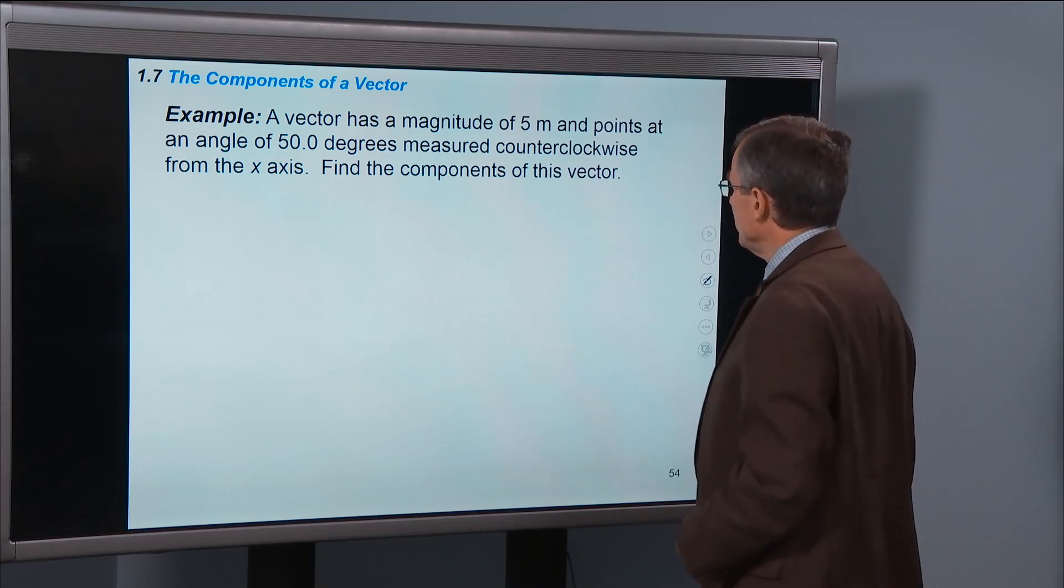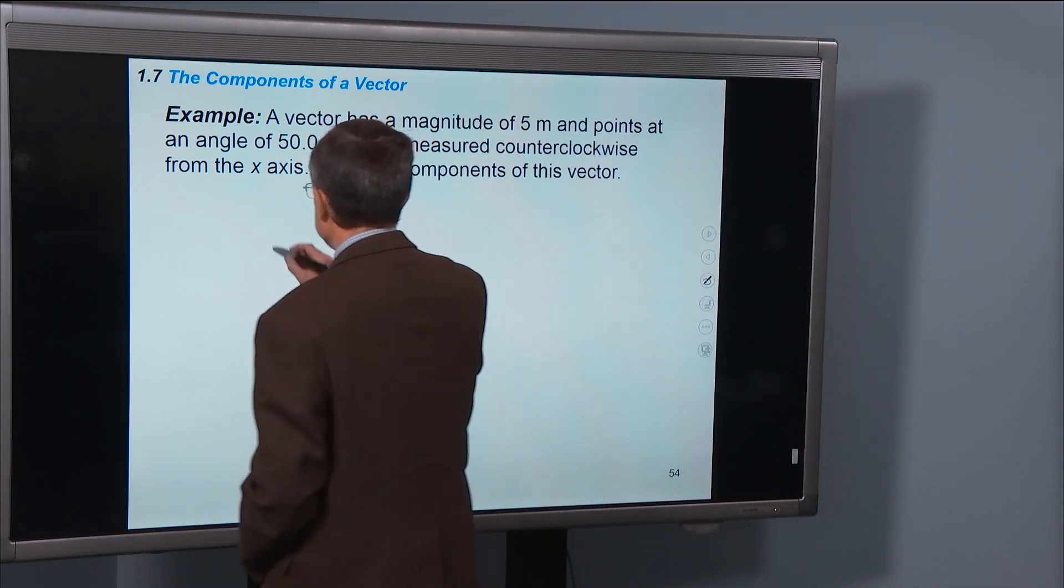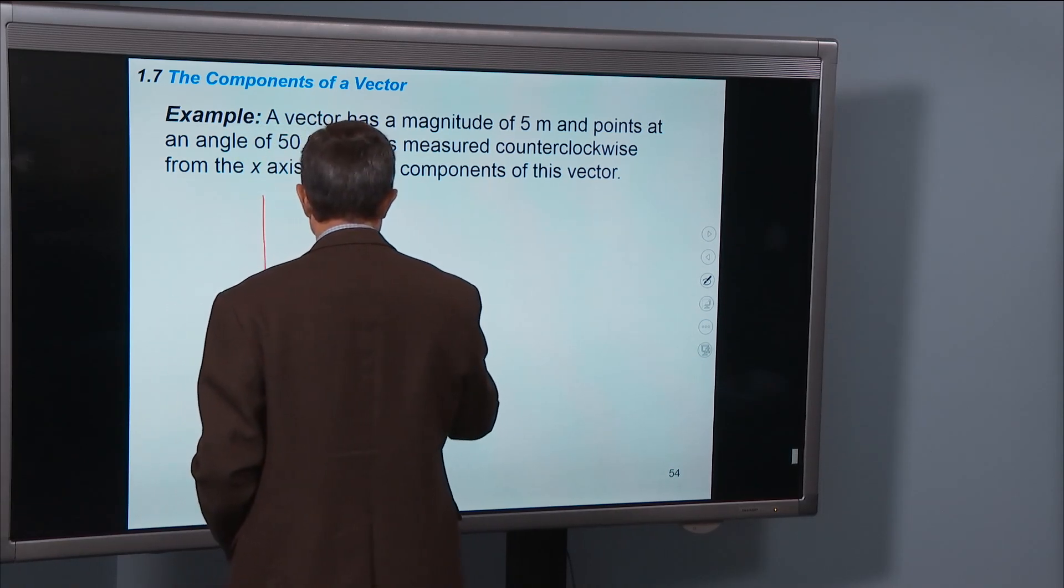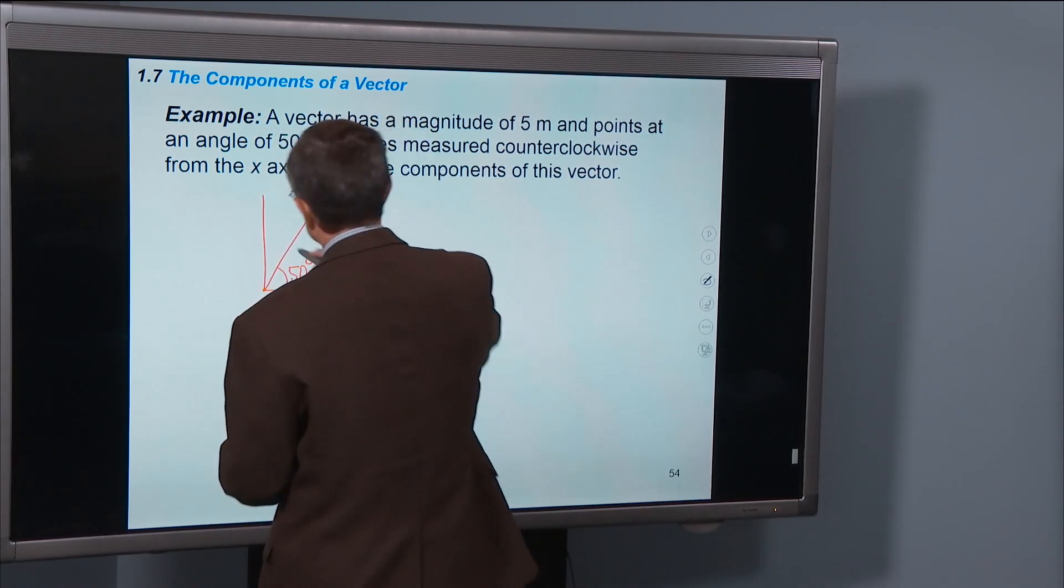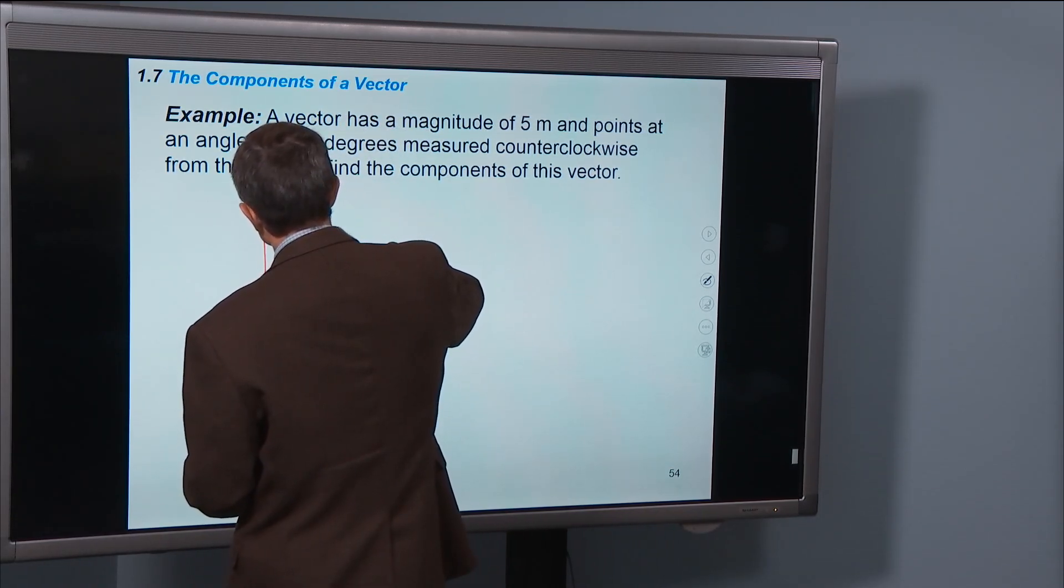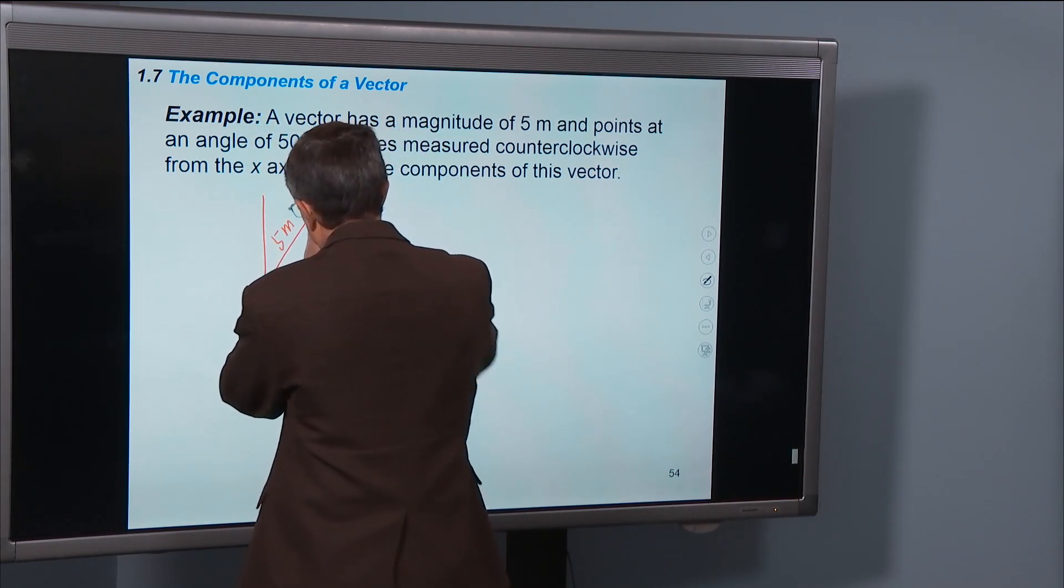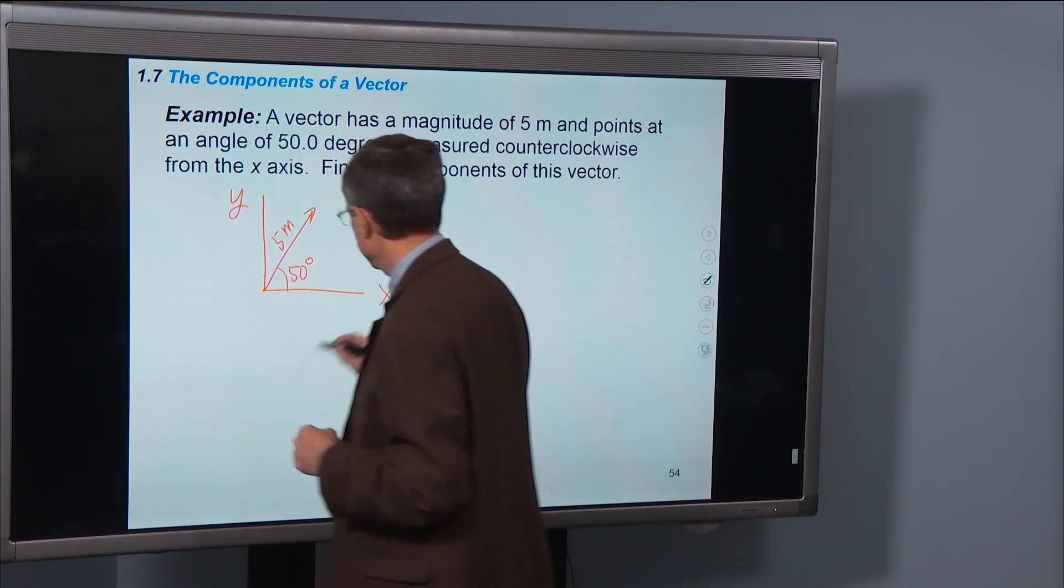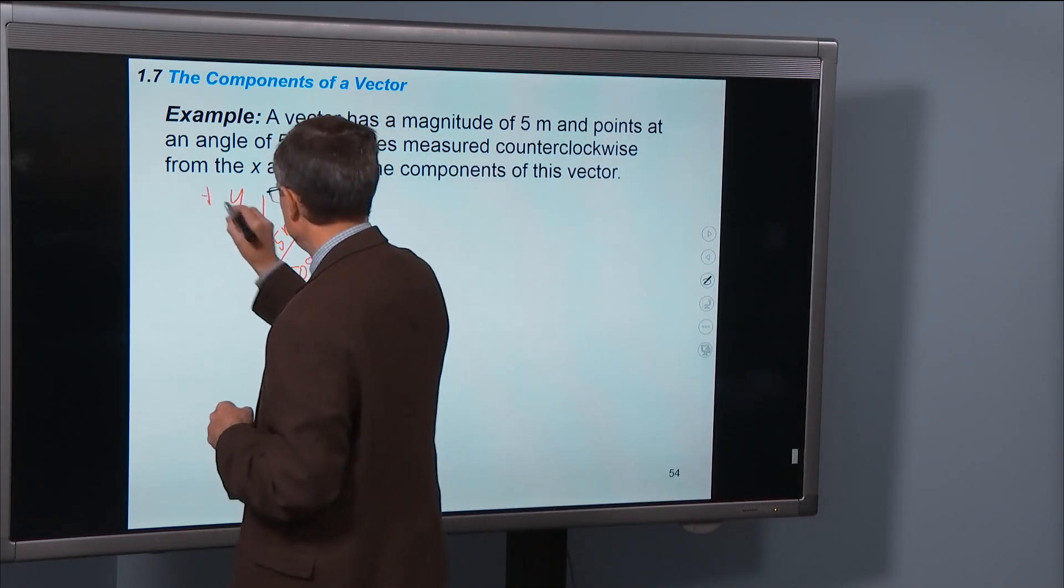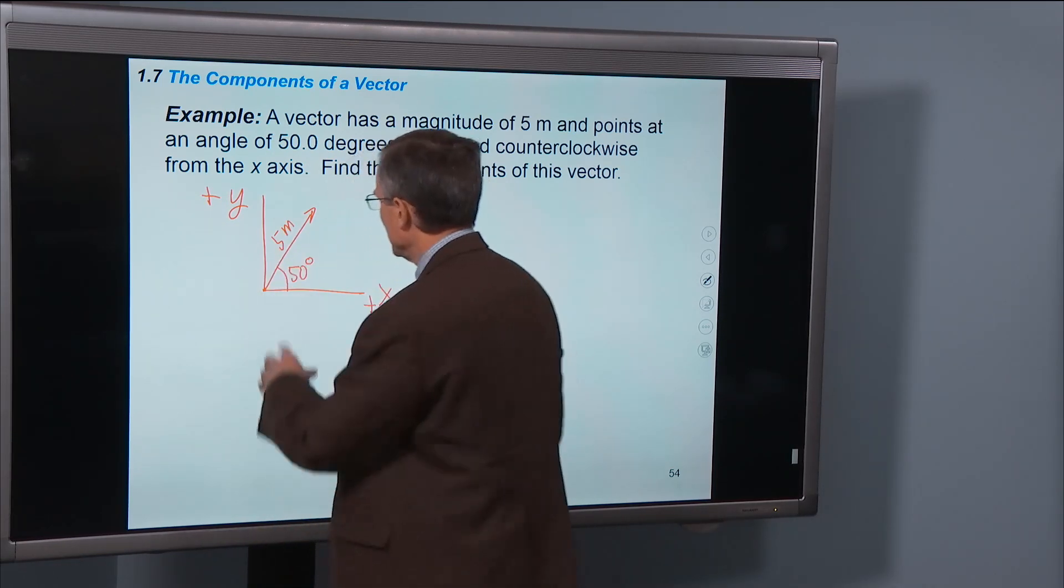All right, a vector has magnitude 5 meters, points at an angle of 50 degrees measured counterclockwise from the x axis. I want 50 degrees, that's about like that, has a magnitude of 5 meters. There's my vector. Here's the y axis, plus y axis, plus x, plus y. This is minus x, and that's minus y.